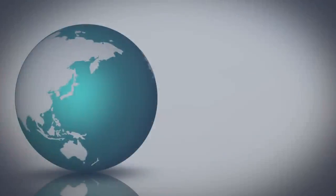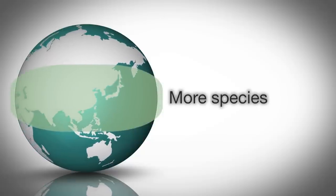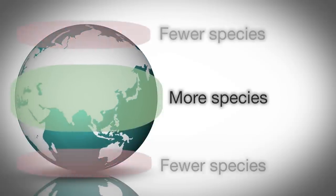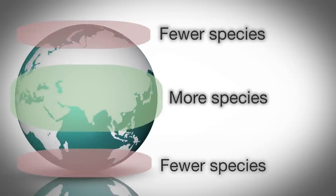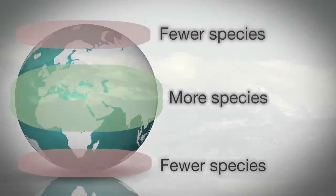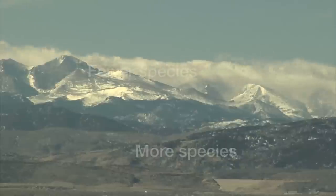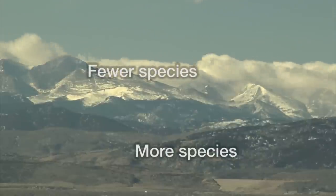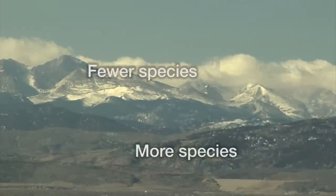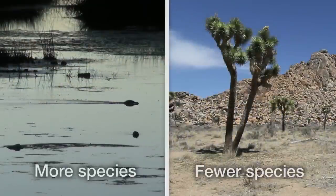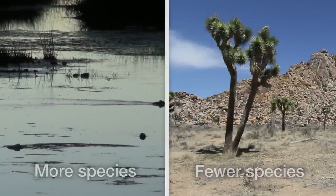Species diversity is not evenly distributed across the globe. There tend to be more species at lower latitudes and fewer species towards the poles, more species at lower elevations compared to higher elevations, more species in wetter climates compared to drier climates, and more species in larger geographic areas.